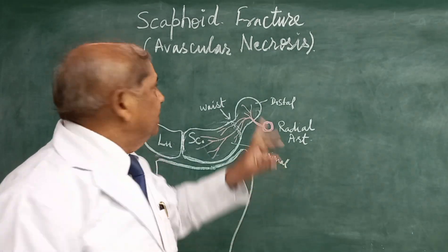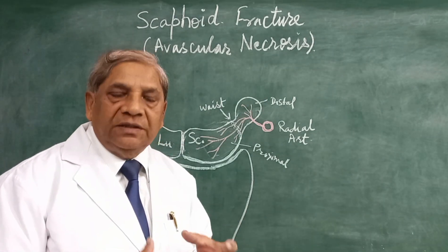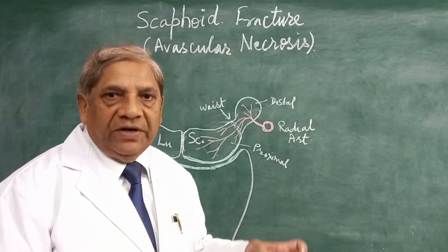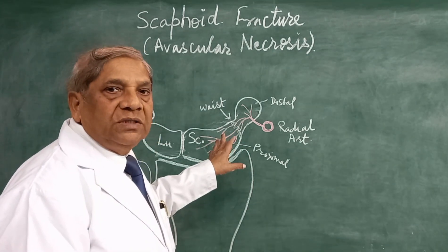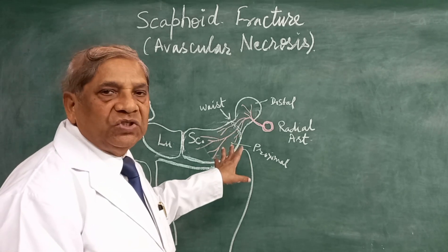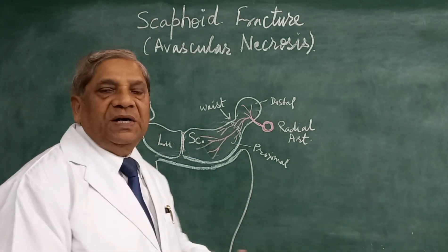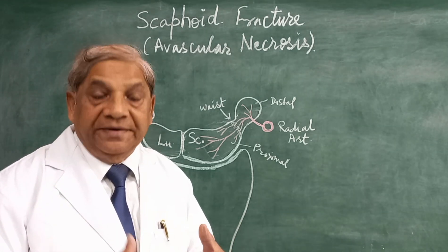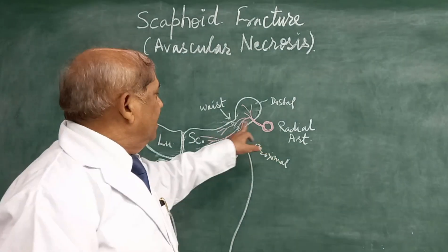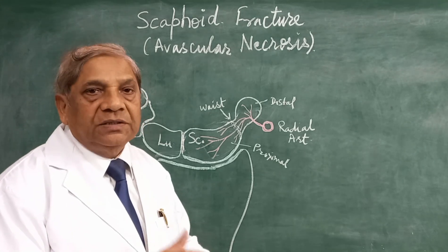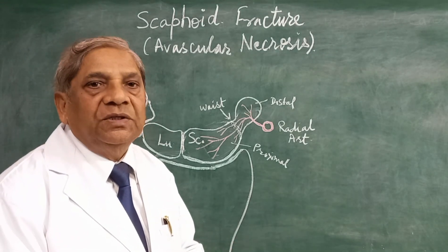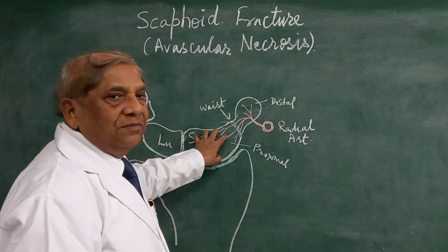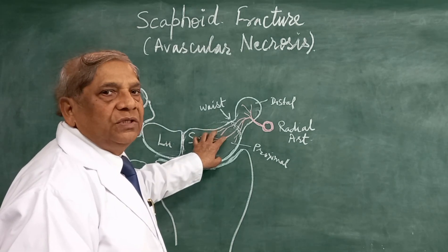Necrosis means the pathological death of tissue due to an abnormality. Here it is avascular necrosis — there is no blood supply, meaning no nutrition and no oxygen is reaching the tissue of the proximal part of the bone. So the proximal part of the scaphoid gradually degenerates and becomes dead. There is no way it can heal because the blood supply is cut off — that is why it is called avascular necrosis, and this part shows degenerative changes.